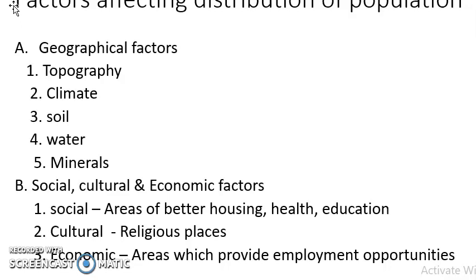Next important factor is cultural factor. Cultural factor means places which have more importance of religion. For example, religious places like temples, mosques, churches — areas famous for these affect the distribution of population. Cultural factors which affect the settlement of people — for example, Varanasi, Jerusalem, Vatican City. Such places people prefer because it gives them religious importance and cultural significance.